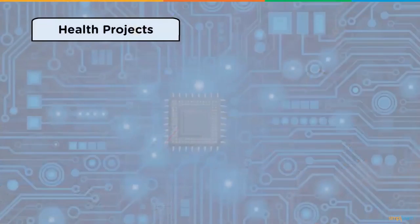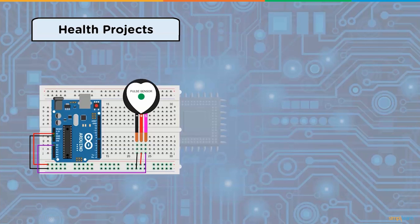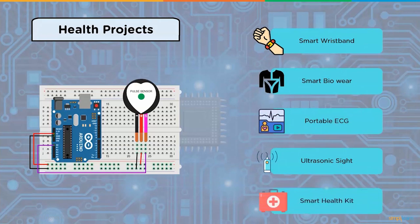Health projects using Arduino: medical equipment with internet connectivity that can measure health data such as heartbeat, body temperature, blood pressure, ECG, and steps is referred to as an Arduino-based patient health monitoring system. IoT encompasses everything from smart watches to fitness trackers to hospital equipment. Some health projects include smart bridge band, smart bioware, portable ECG, ultrasonic sight, and smart health kit.